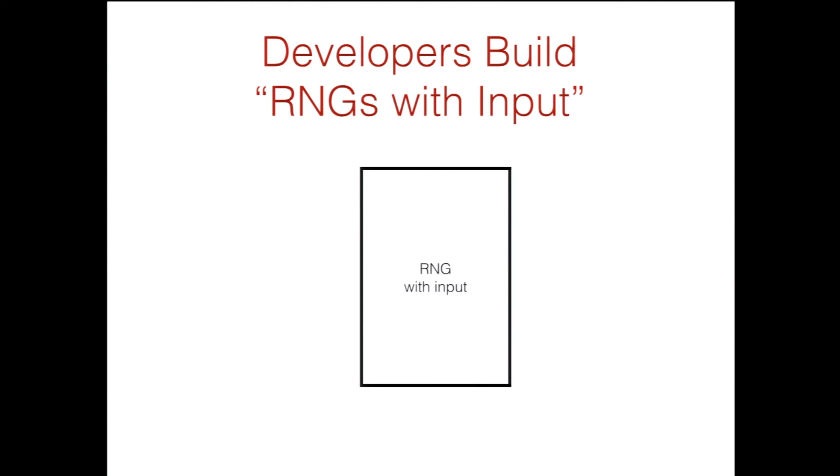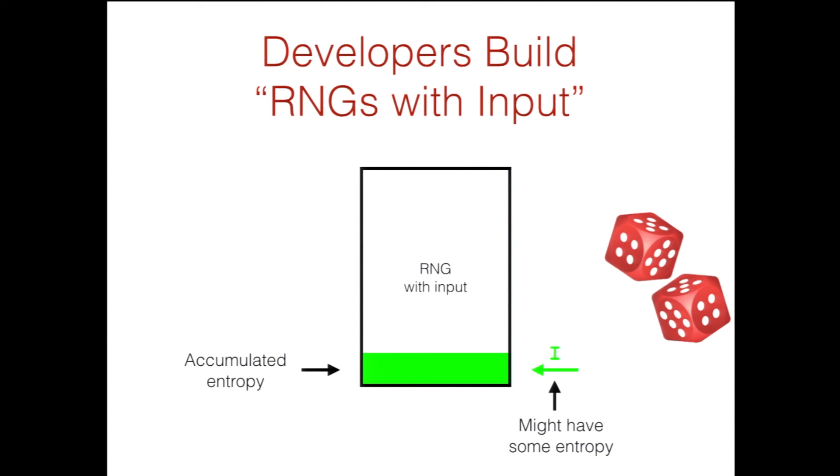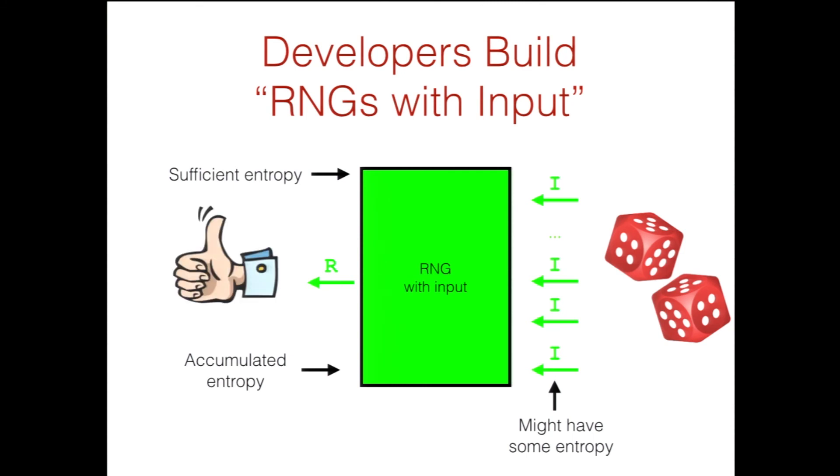It's not quite what developers tend to use. Developers tend to use what we're calling RNGs with input, these sort of black boxes. The purpose is they have some source of entropy, like interrupt timings or something like that. The source of entropy might provide some input. This input might have some entropy. We don't know. But if it does, we hope to accumulate the entropy inside the state of the RNG with input. This can keep happening. We can continue accumulating more entropy as we receive more input. Eventually, we hope to reach some threshold where we have sufficient entropy, at which point we hope that the RNG with input will be secure, by which we mean that it can provide output that's pseudorandom.